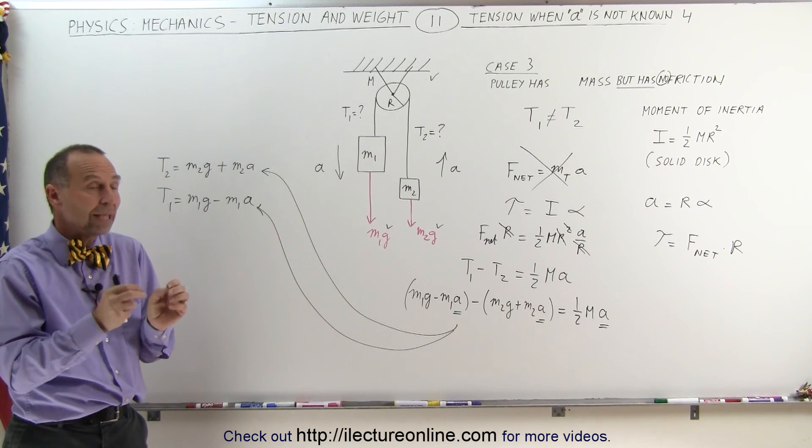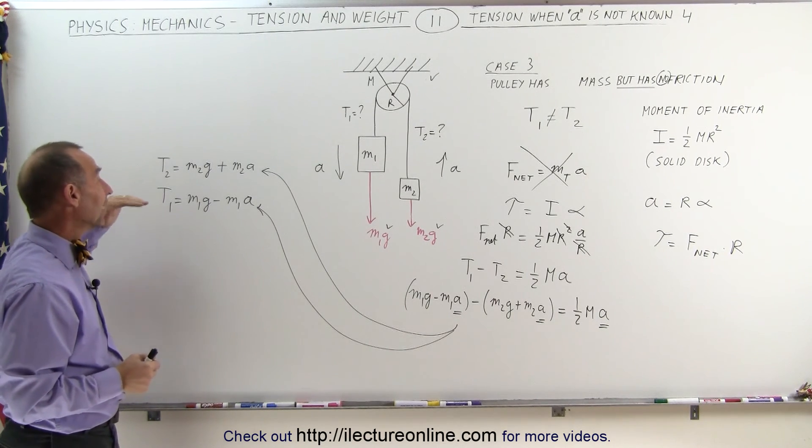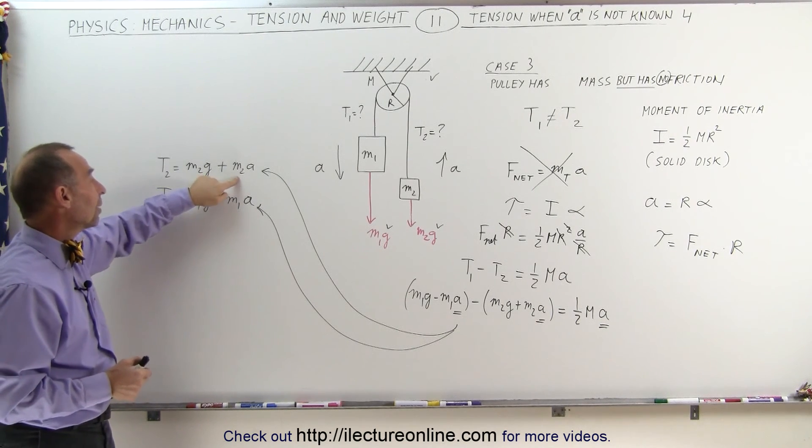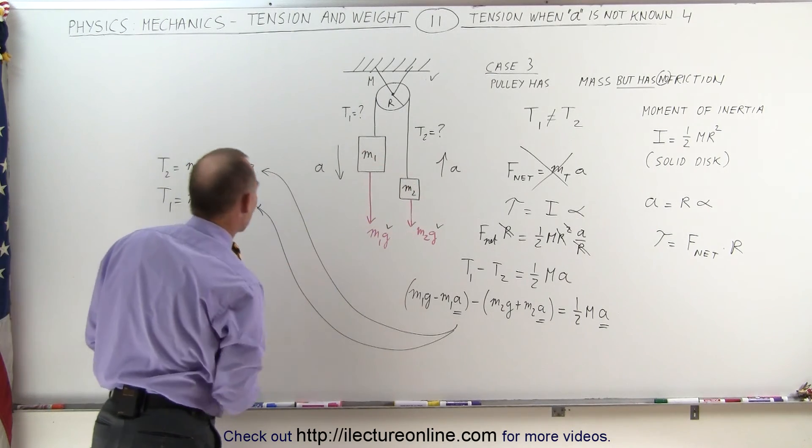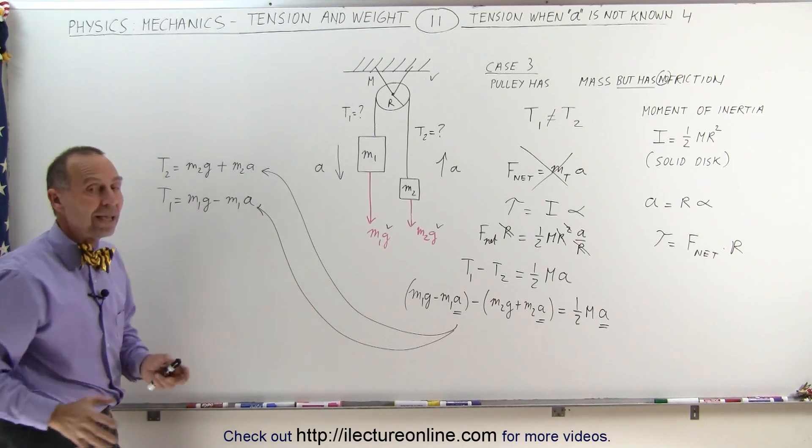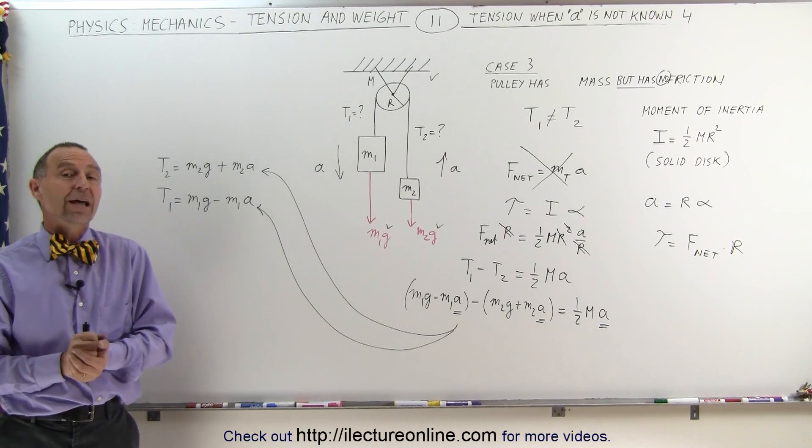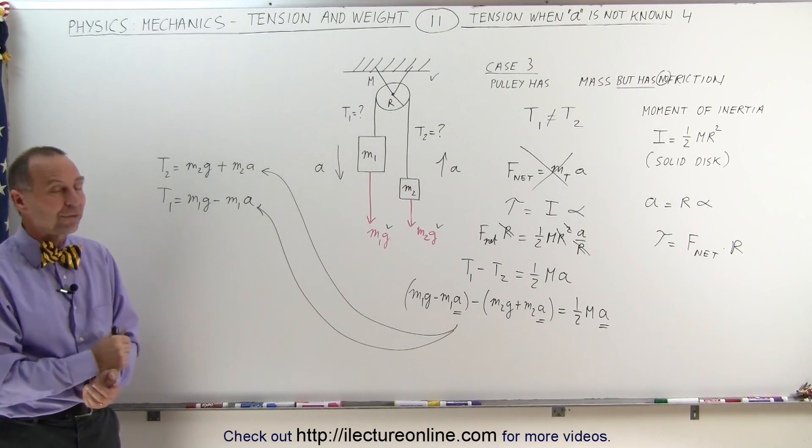Here we just wanted to show you that there's different ways in which you can find the tension in the strings but it always comes down to the tension is always equal to m2g plus m2a or m1g minus m1a. If you ignore the subscripts the general approach is always mg plus ma or mg minus ma that might be a better way to say it and that's how we do that in the case that the pulley has mass and we have to take into account the moment of inertia.